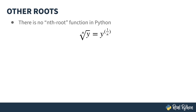Python does not have an nth root function, but that isn't a problem because of this neat little math trick: the nth root of something is the same as the value to the power of 1 over n. For instance, the cube root of y is equivalent to y to the power of 1 third, or 1 over 3. Let's go back to the REPL and use this.